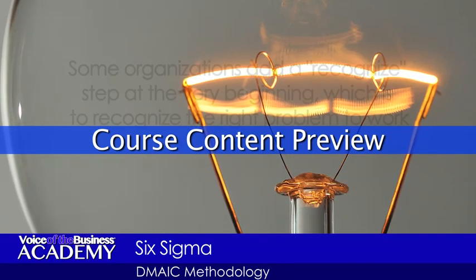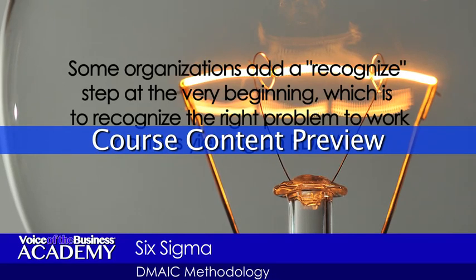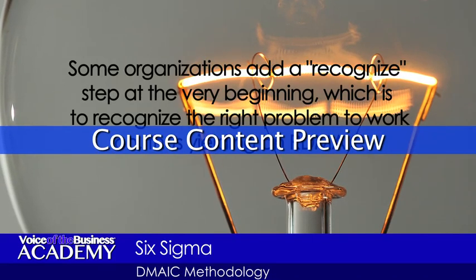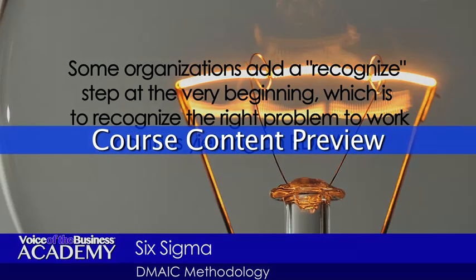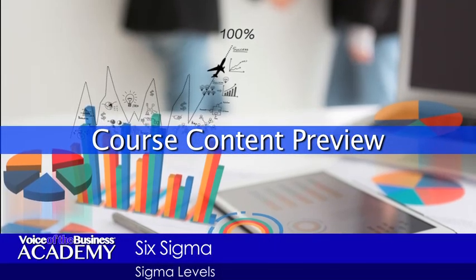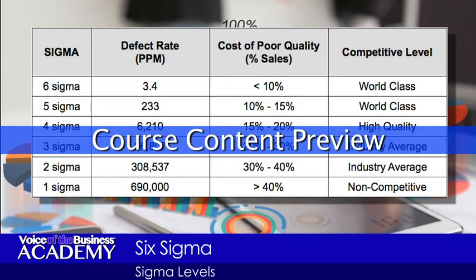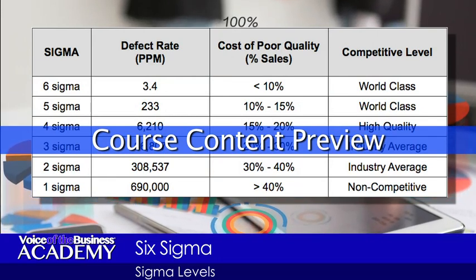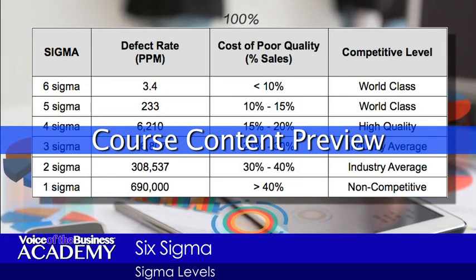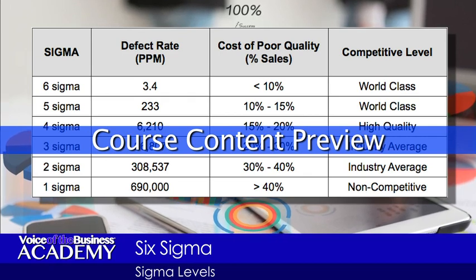Some organizations add a recognized step at the very beginning, which is to recognize the right problem to work on, thus yielding an R-DMAIC methodology. Control charts are used to maintain Six Sigma quality by signaling when quality professionals should investigate a process to find and eliminate special cause variations.